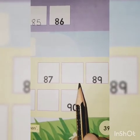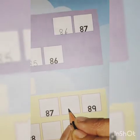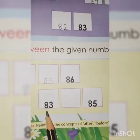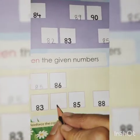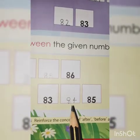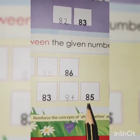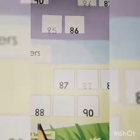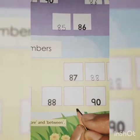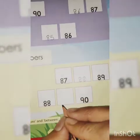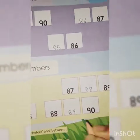87? 88? 89? Yeh bhoat easy hai. 83 then 84? So 83 and 85 ke beech me kaunsa number aya? 84. Okay, 88 blank 90. Yahan pe kaunsa number missing hai? Yes, 89. Done?